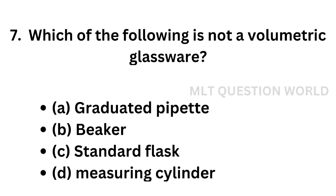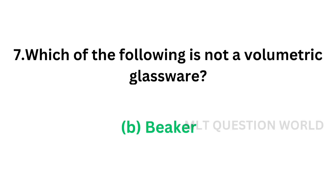Question number 7. Which of the following is not a volumetric glassware? The correct answer is option B. Beaker is not a volumetric glassware; the others are volumetric glassware.